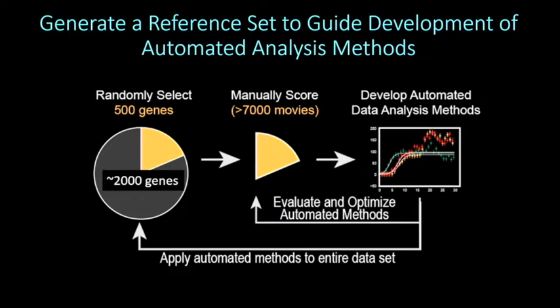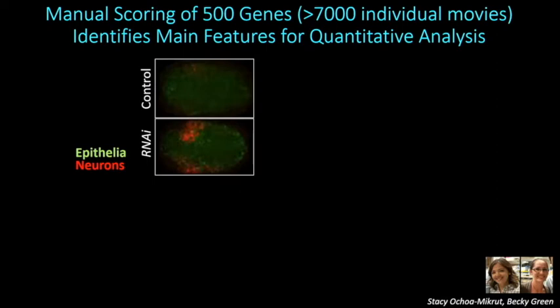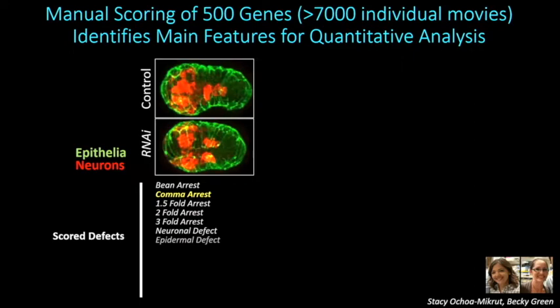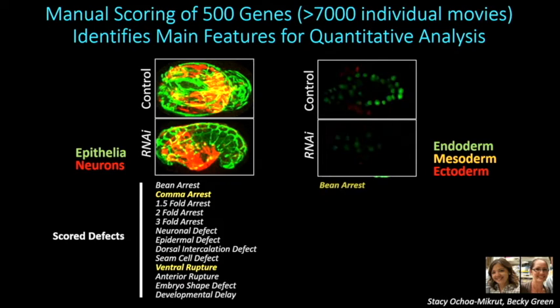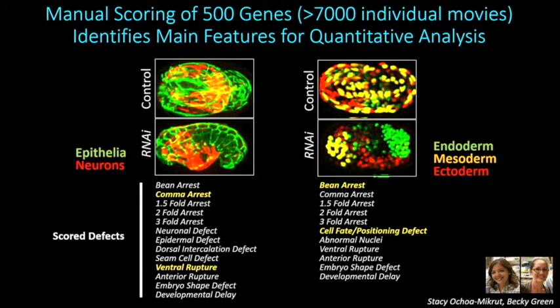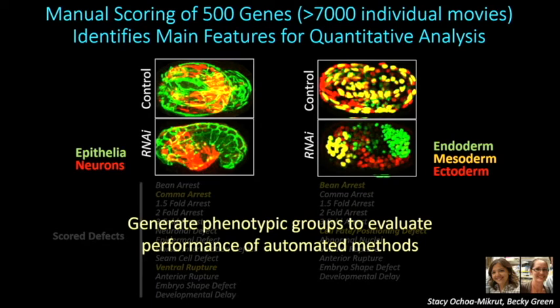For our manual scoring, we scored each individual embryo one at a time using points of arrest and tissue-specific measures, getting a very detailed readout in both strain backgrounds for each RNAi condition. We scored over 7,000 movies manually, which gave us a good idea of the types of data within the dataset. We then took a subset of these genes and put them into phenotypic groups, serving as a proxy for ground truth that we can use to evaluate our overall automated approach.